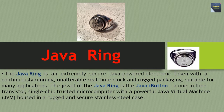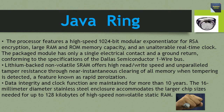The jewel of the Java Ring is the Java iButton. It contains a 1 million transistor, single-chip trusted microcomputer with a powerful Java Virtual Machine housed in a rugged and secure stainless steel case. The processor features a high-speed 1024-bit modular exponentiator for RSA encryption, large RAM and ROM memory capacity, and an unalterable real-time clock. The packaged module has only a single electrical contact and a ground return.